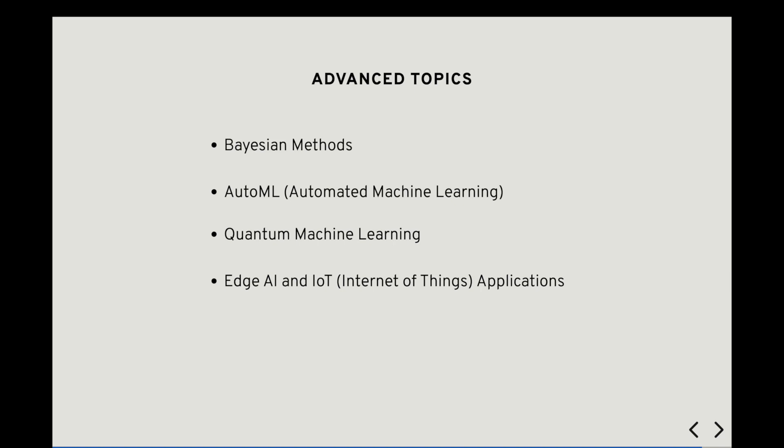The field of artificial intelligence continues to evolve rapidly, driven by advances in algorithms, hardware, and applications. By exploring advanced topics such as Bayesian methods, AutoML, quantum machine learning, and edge AI, researchers and practitioners can stay at the forefront of AI innovation and harness the full potential of emerging technologies.